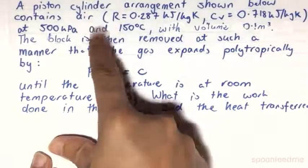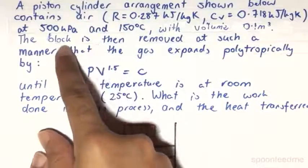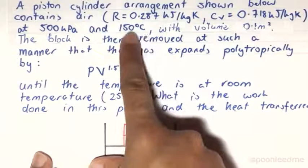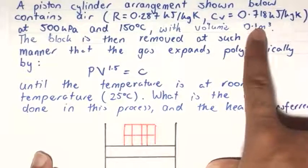So anyway, this piston cylinder arrangement contains air initially at 500 kilopascals and 150 degrees Celsius, with a volume of 0.1 meter cubed.